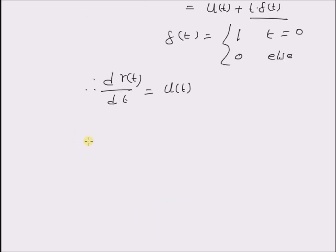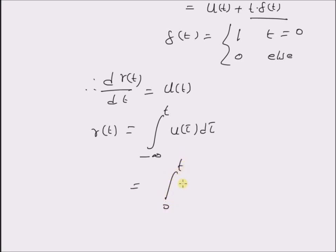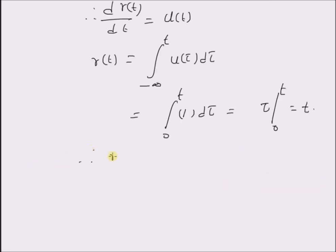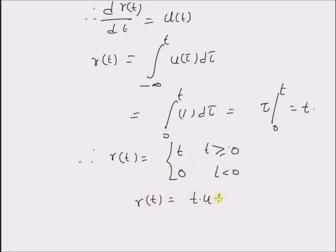We can directly use the integration formula as follows: R of t is equal to the integral from minus infinity to t of u of tau d tau. And since u of tau is 1 only for tau greater than 0, the integral becomes the integral from 0 to t of 1 d tau, which equals tau evaluated from 0 to t. Therefore, R of t is equal to t for t greater than or equal to 0, and 0 for t less than 0. This definition can be easily rewritten as R of t equal to t times u of t.